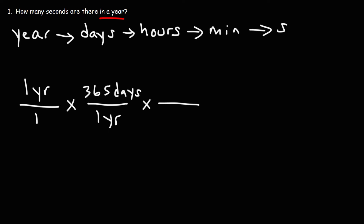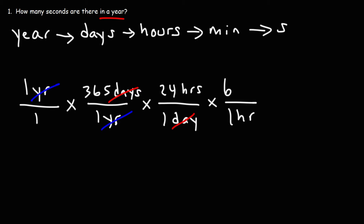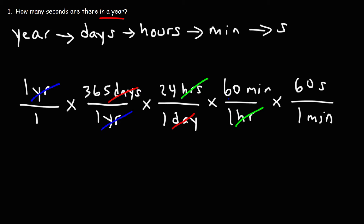Now let's convert days to hours — there are 24 hours in a day. So we can cross out the unit days, and now let's convert hours to minutes. There are 60 minutes in an hour, and 60 seconds in a minute. Notice how we set up the conversion fractions in such a way that every unit will cancel except the desired unit, which is seconds.